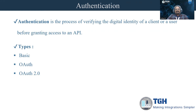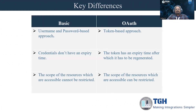Let us first understand the difference between basic and OAuth. Basic is a username and password based approach, whereas OAuth is a token based approach. In basic, the credential doesn't have any expiry time unless it is manually changed. But in case of OAuth, the token has an expiry time after which it has to be regenerated. In basic, the scope of the resources which are accessible cannot be restricted, but in case of OAuth, the scope of the resources which are accessible can be restricted.